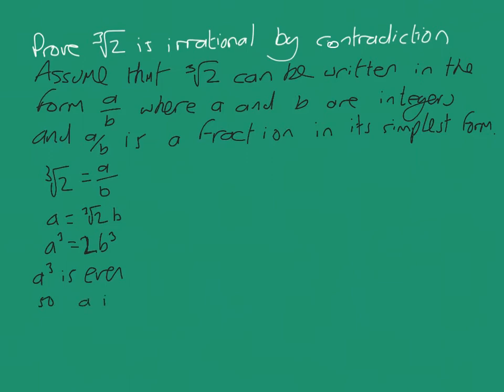So a is even. So we know that a must be even, according to this assumption. Okay, well, if a is even, it must be 2 times an integer. So let a equal 2k. Of course, k is an integer.